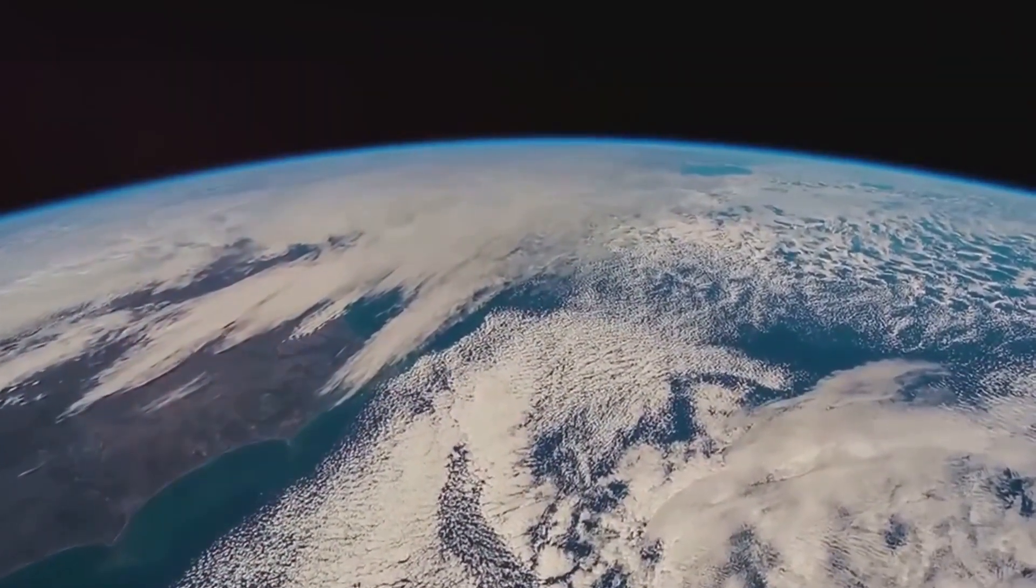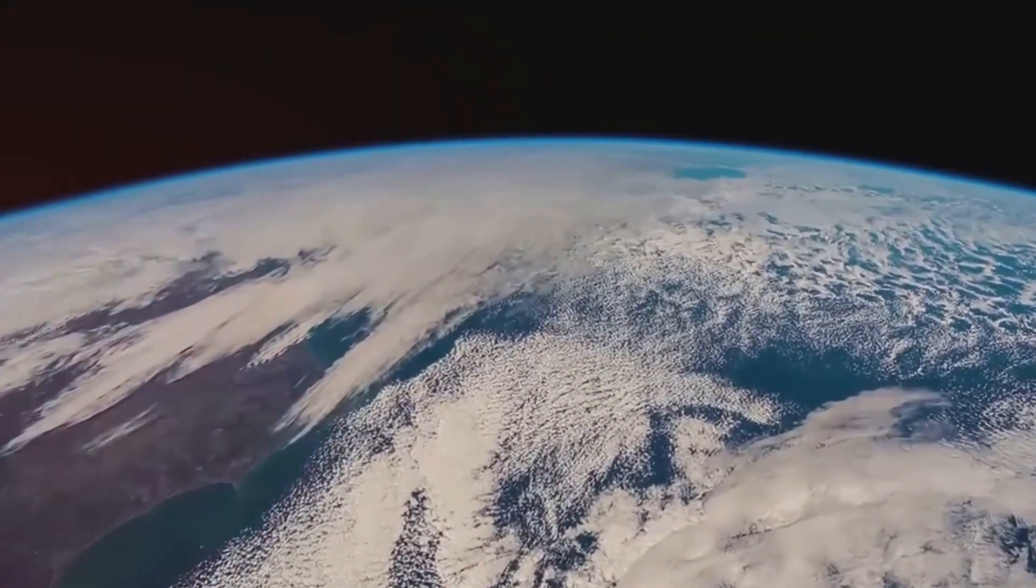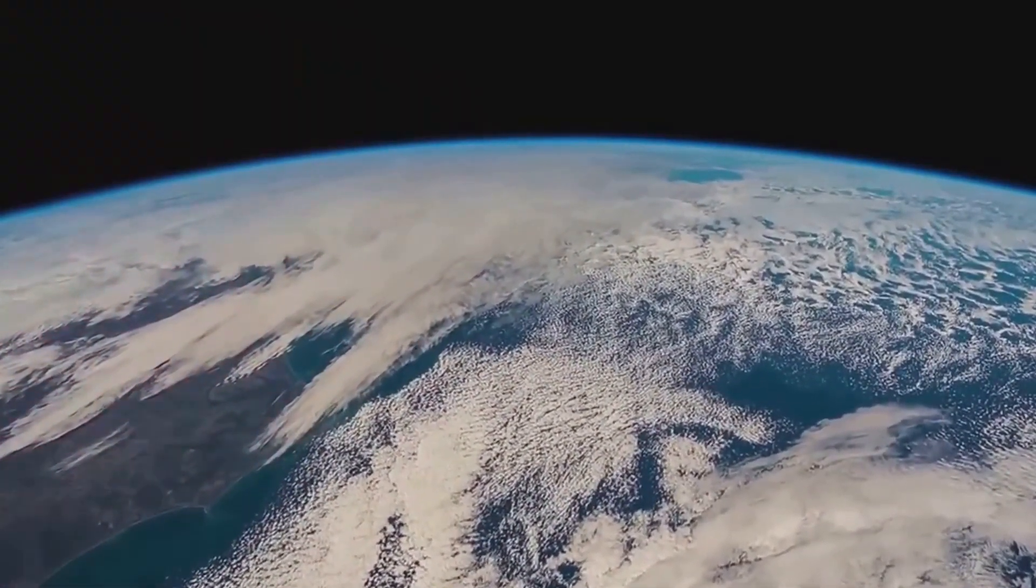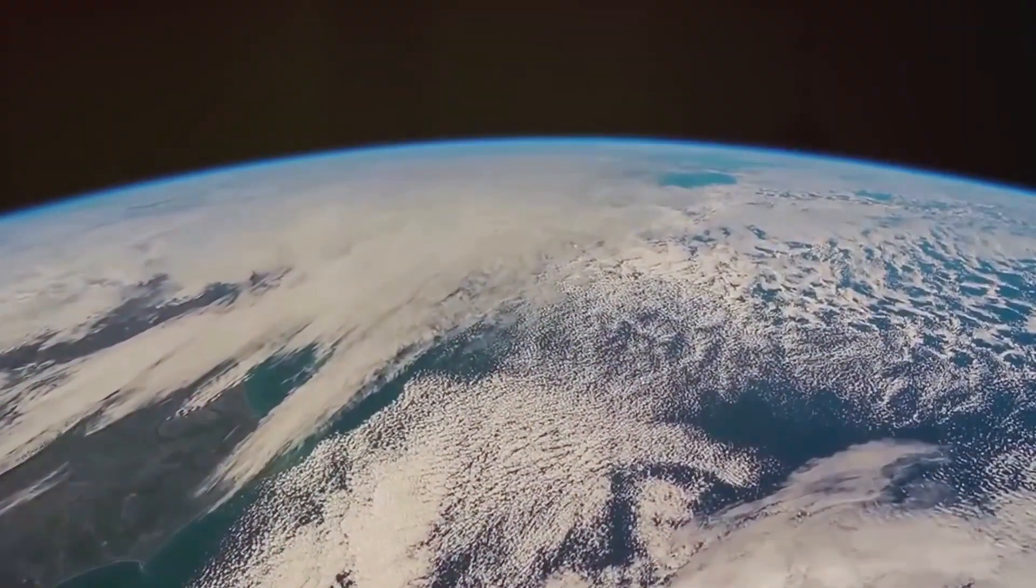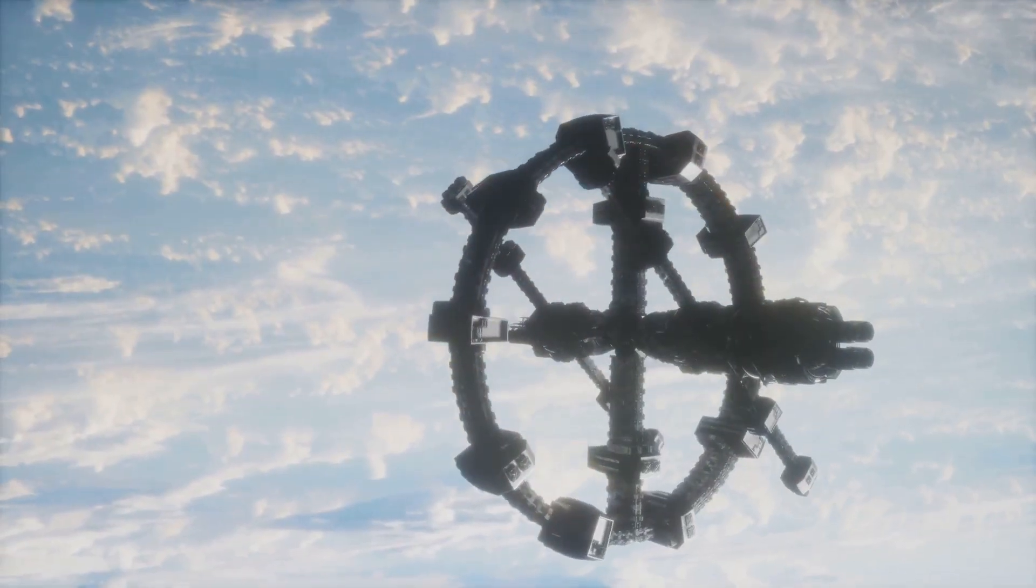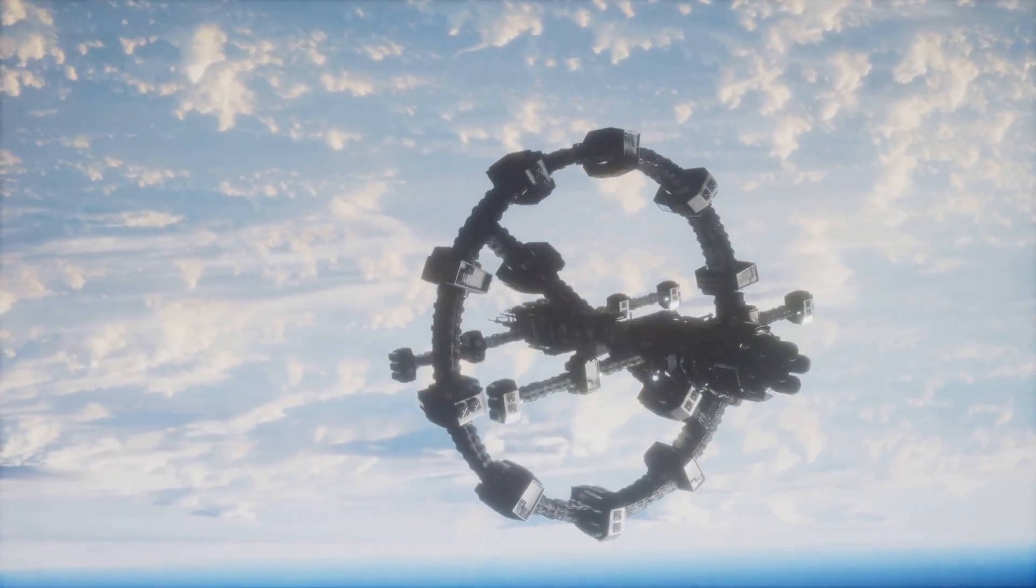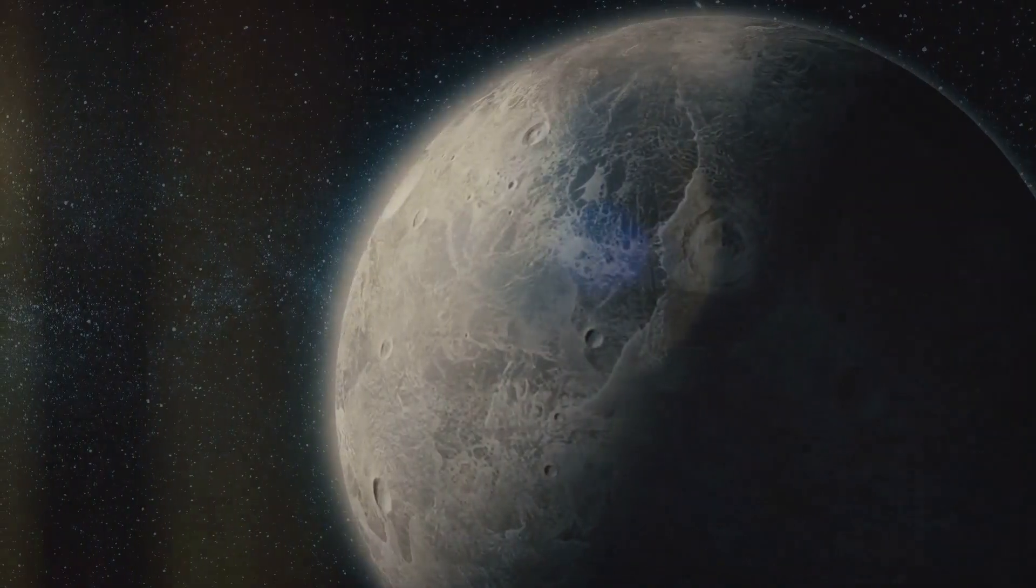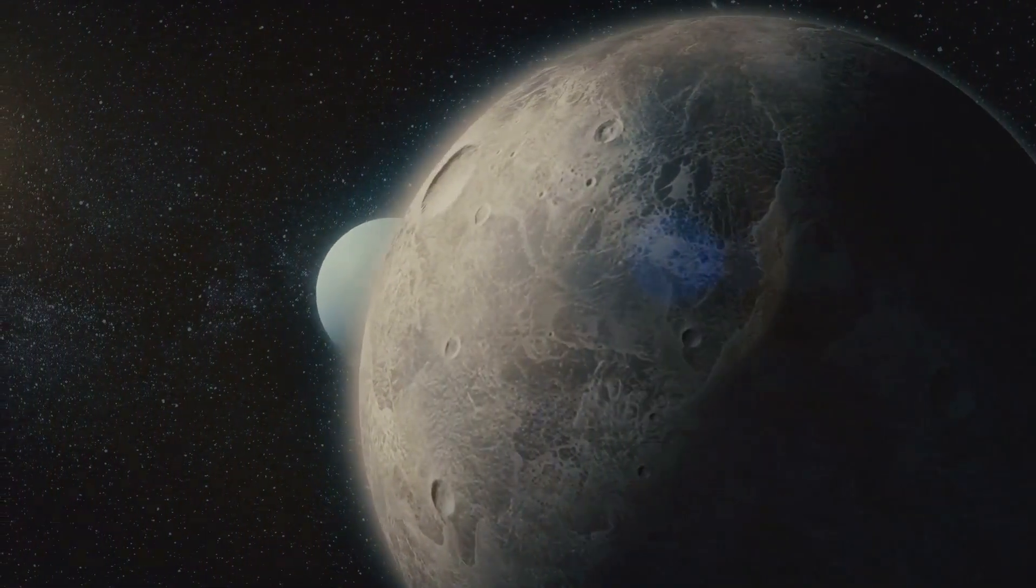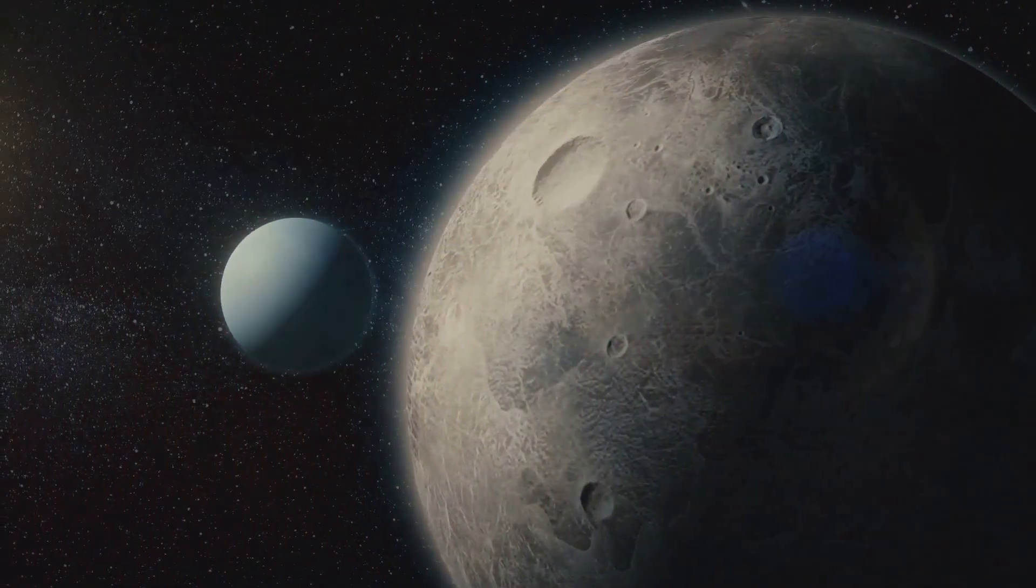The Earth's journey through space doesn't stop at its orbit around the Sun. Our entire solar system is also moving through the Milky Way galaxy. The solar system orbits the center of the Milky Way, taking approximately 230 million years to complete one full orbit. This galactic motion means that the Earth is constantly traveling through different regions of space.